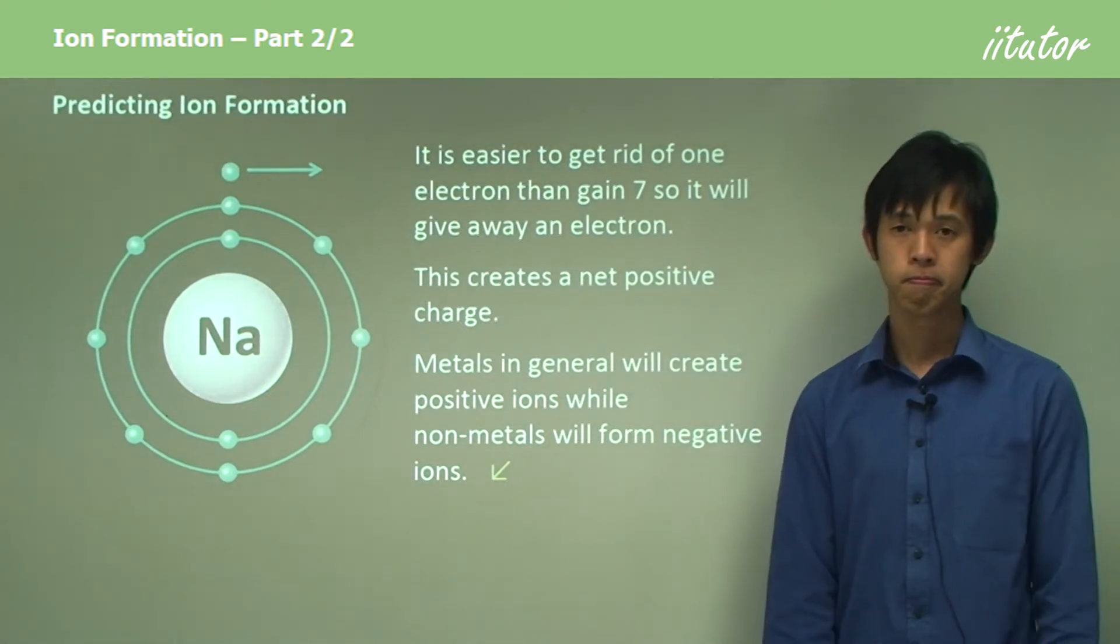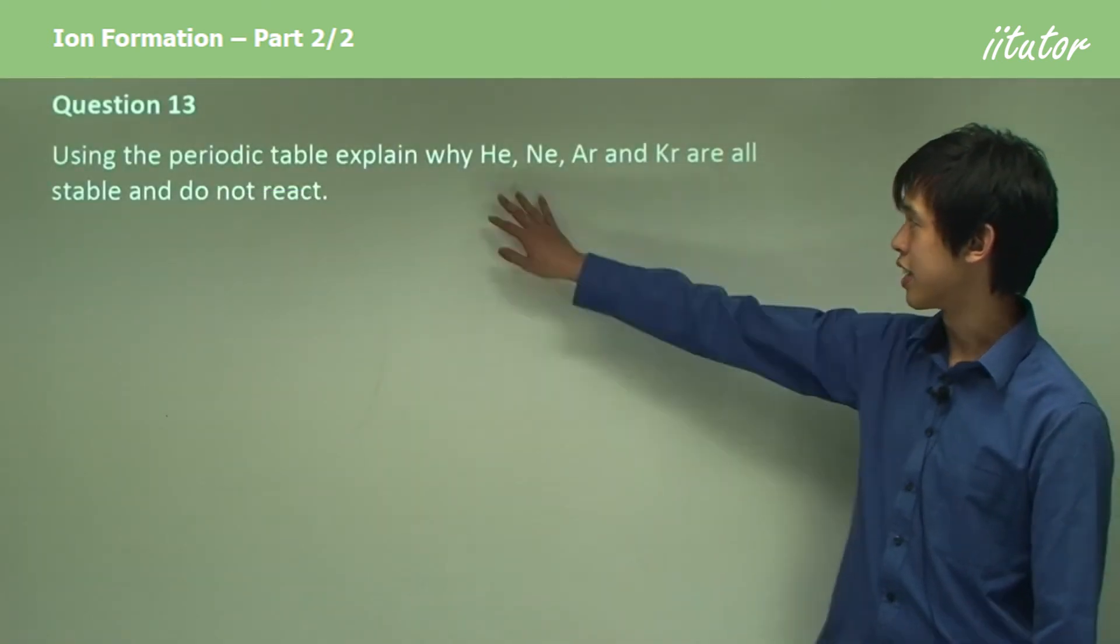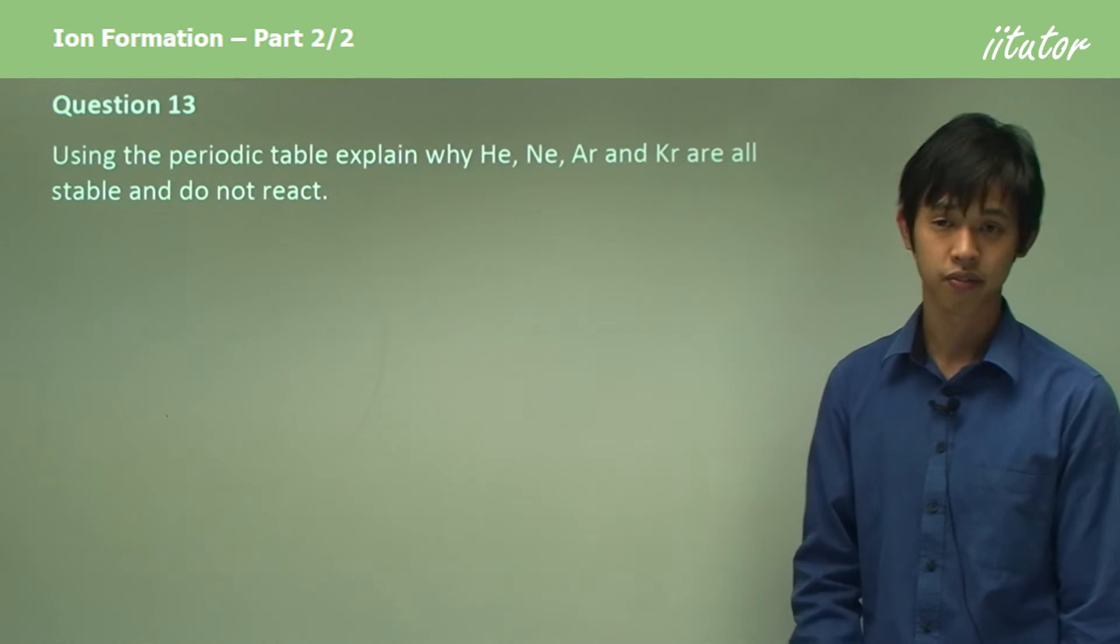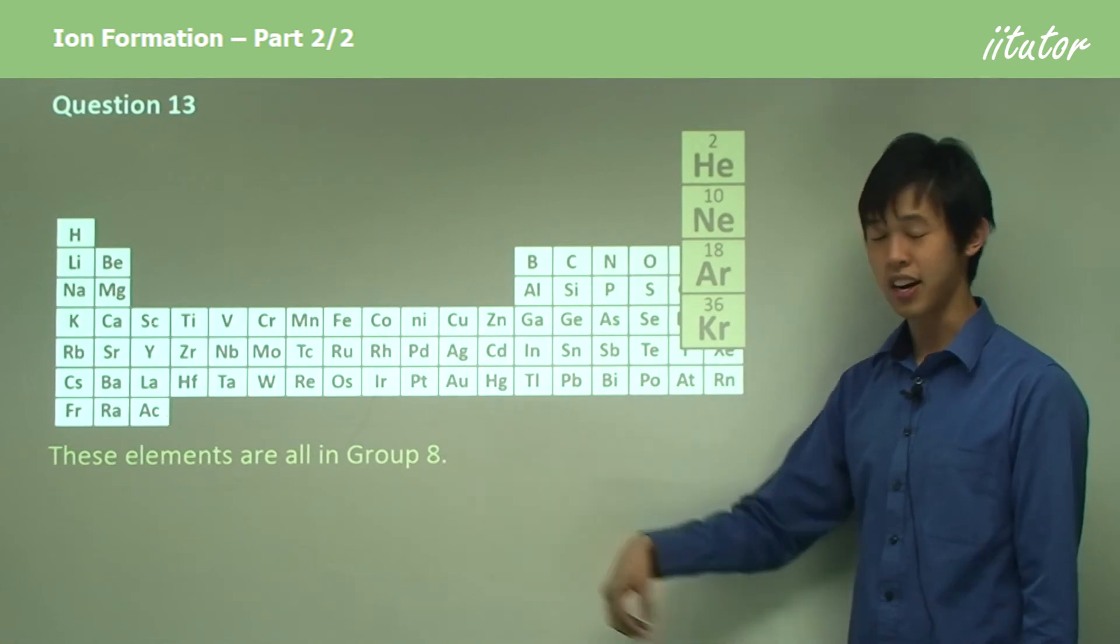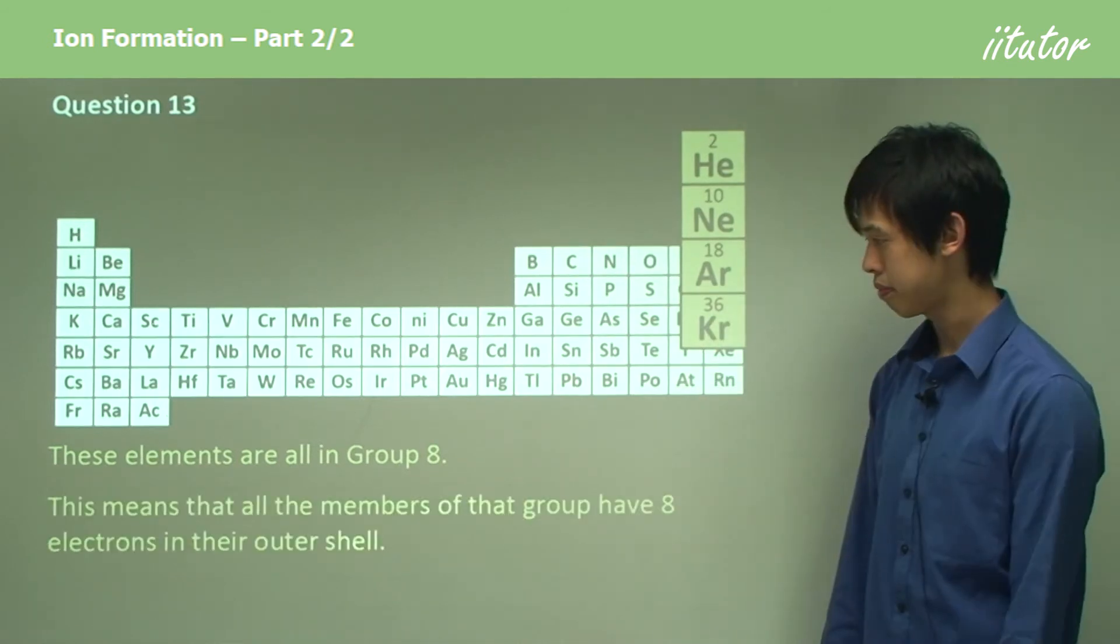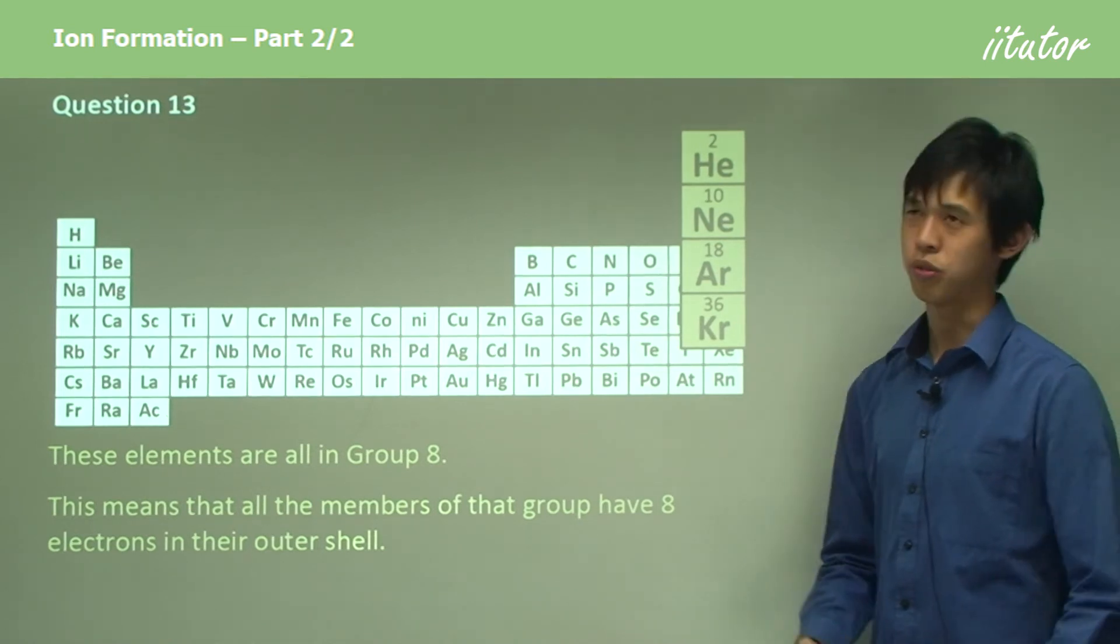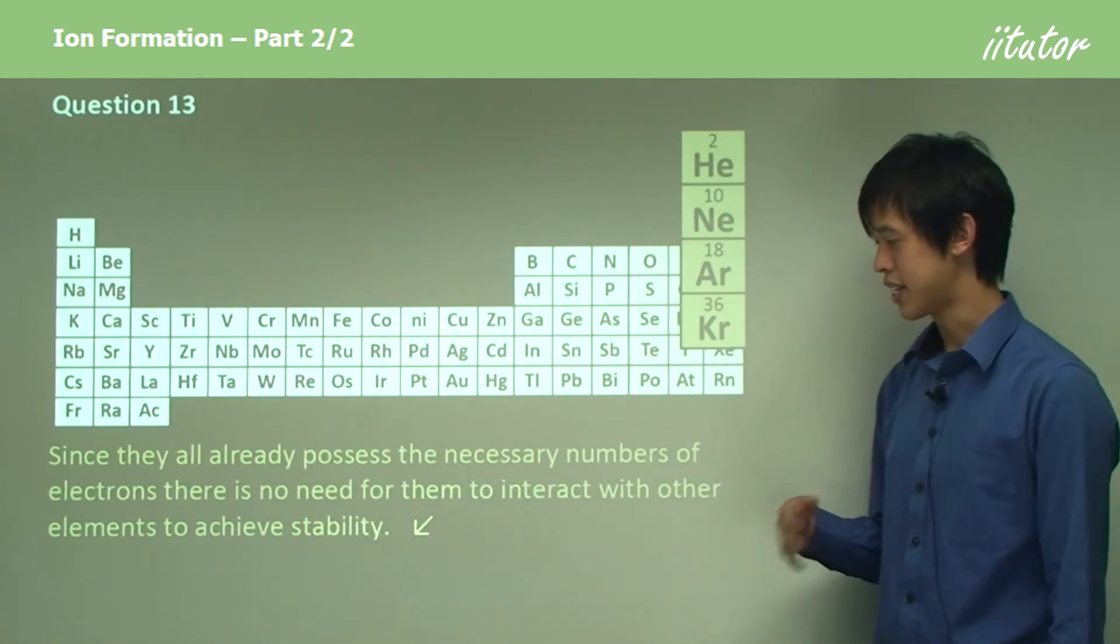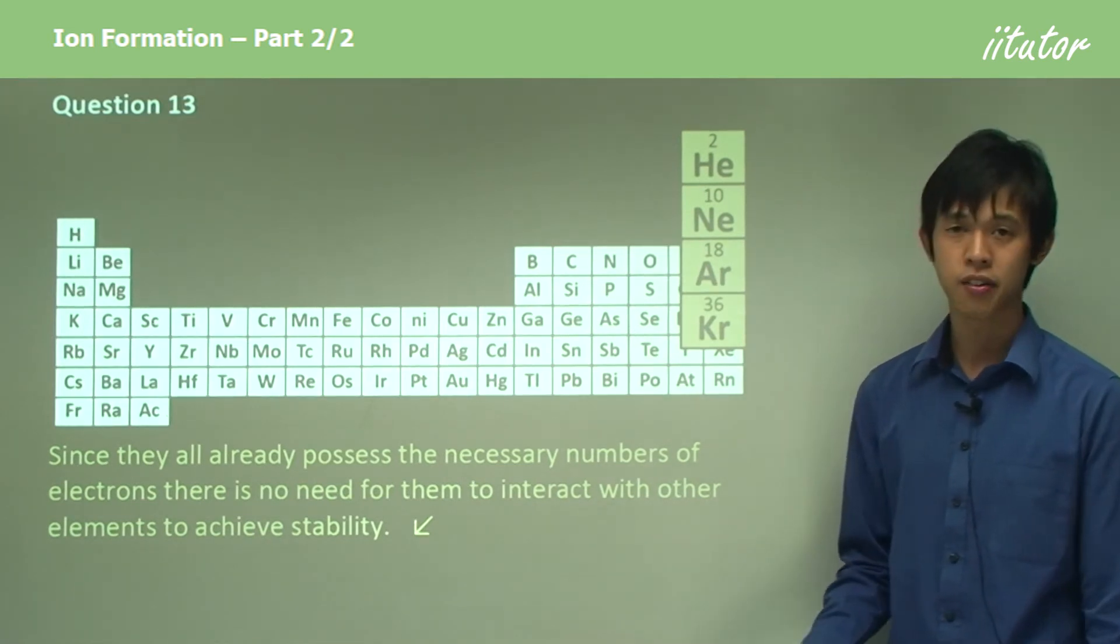Using the periodic table, explain why helium, neon, argon, and krypton are all stable and don't react with anything. All of these elements are in group eight. This means that all the members of that group have eight electrons in their outer shell, or two in the case of helium, which makes it stable. Since they already possess the necessary number of electrons, there's no need for them to interact with other elements to achieve stability.